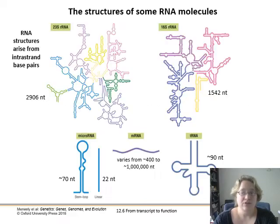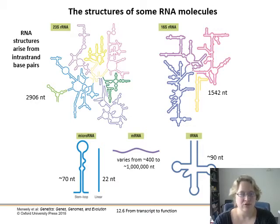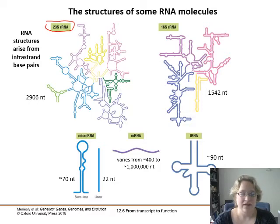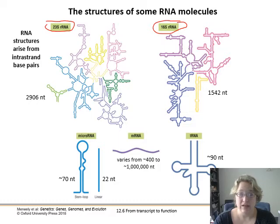From transcript to function: we have RNA molecules that don't actually go on to code for any proteins. There are a lot of different shapes and interesting forms of RNA in addition to messenger RNA that goes to the ribosomes. We have rRNA — the 23S and 16S subunits of ribosomal RNA — because ribosomes are made up of a blend of protein and RNA. We also have microRNAs that form hairpins, and transfer RNAs, which help amino acids get to the ribosomes.